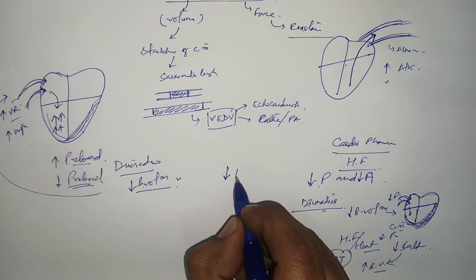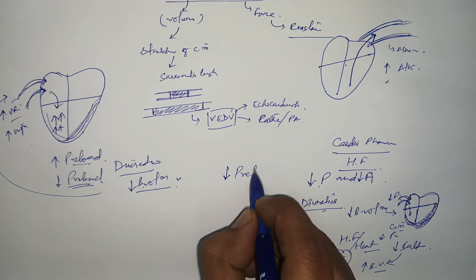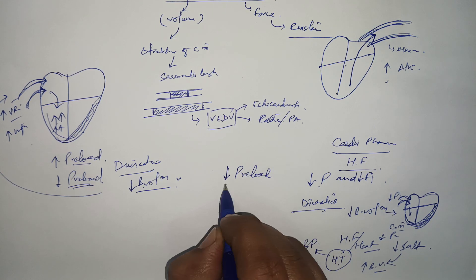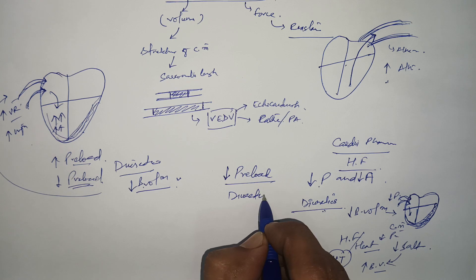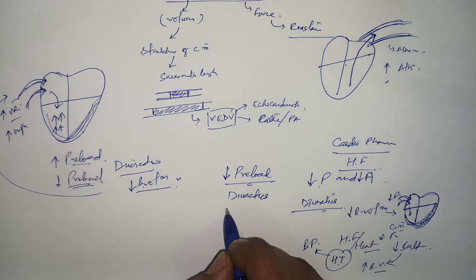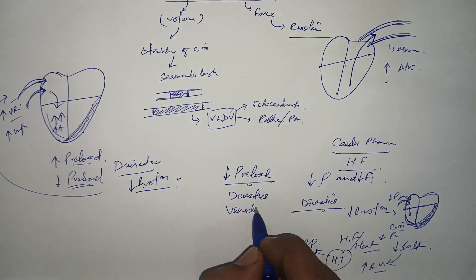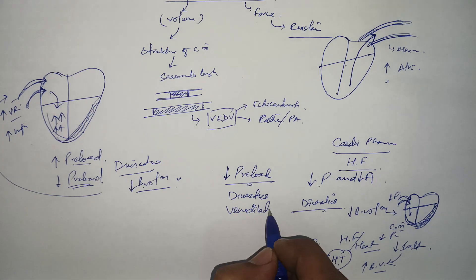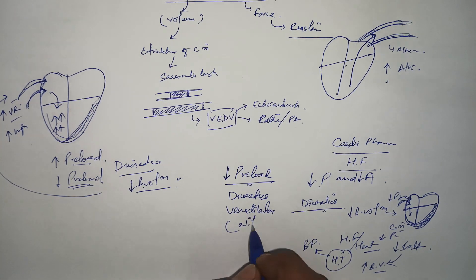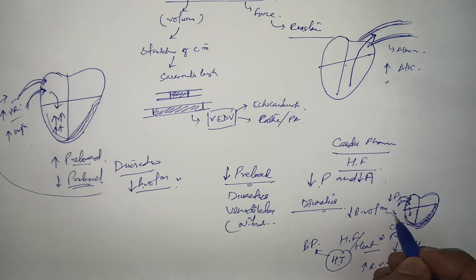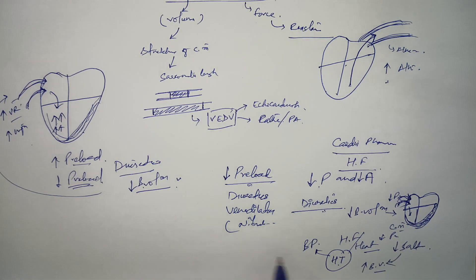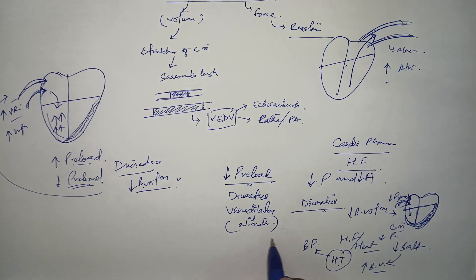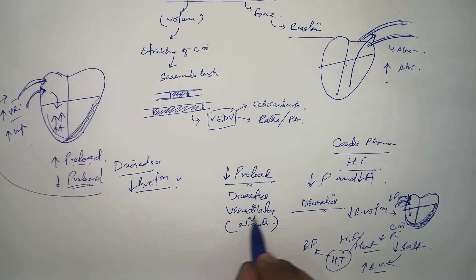The drugs that decrease preload: number one and most common are diuretics, and second are vasodilators such as nitrates.